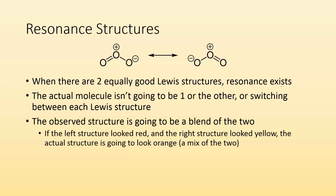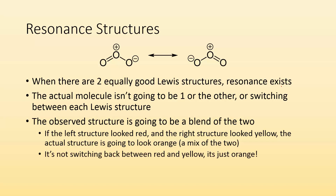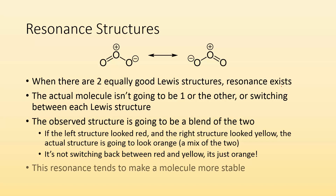It's not going to be red, it's not going to be yellow — it's going to be kind of in between those two things. And it's not switching back and forth between red and yellow. It's just orange. It's not red for a little bit and yellow for a little bit — it's just permanently orange, permanently just the in-between thing. Resonance also tends to make a molecule more stable.